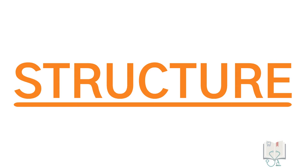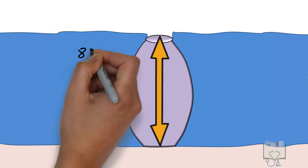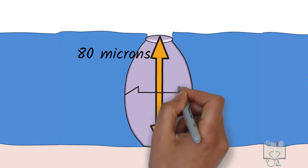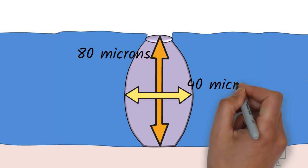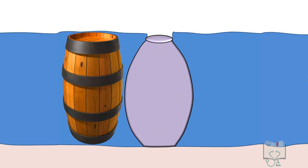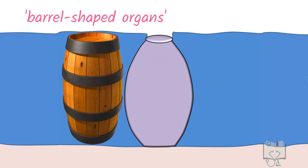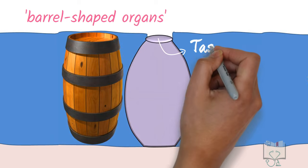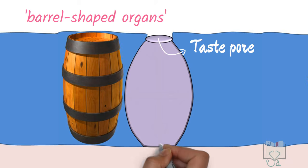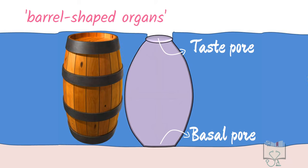In terms of structure, taste buds are ovoid intra-epithelial organs with a height of 80 microns and a width of 40 microns. They are frequently referred to as barrel-shaped organs. The outer end is called the taste pore and the inner end the basal pore.